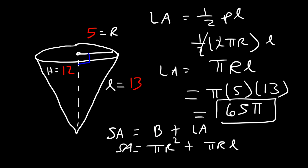So πR² is going to be π times 5², and we know πRL is 65π based on this answer. 5² is 25, and 25 plus 65 is 90. So the total surface area is 90π in this example.